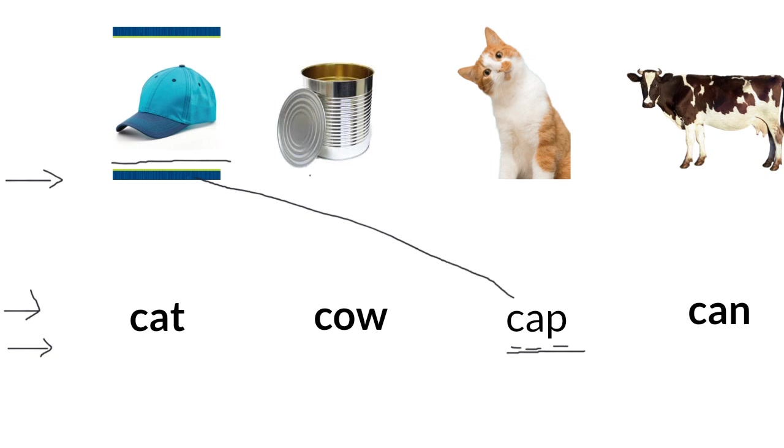Okay, now take a look at the second picture. This is a can. Can. Can you find the word can? Yes, this is the word can. C-A-N. Can. So I draw a line from the picture, can picture, to the word can.